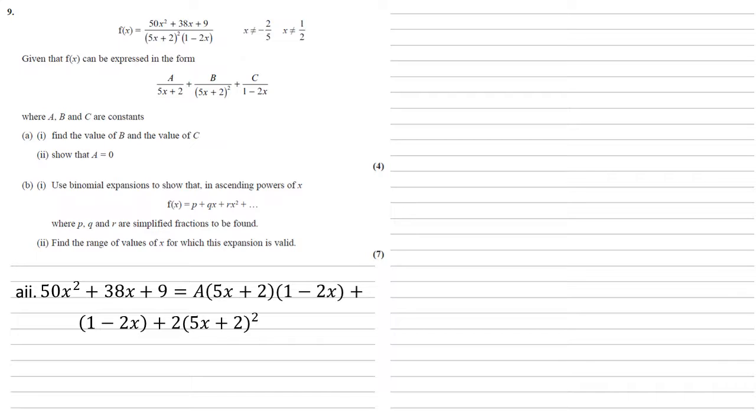Now again we could expand all these and equate them, it'll take a little while, so another method is to set x to 0. This will cancel out a lot of our terms then, we'll get rid of the x squared and the x from the left, we'll simplify the brackets on the right, it'll make things a lot easier.